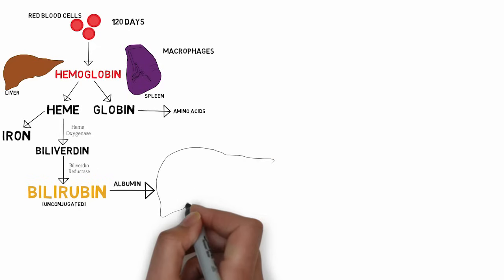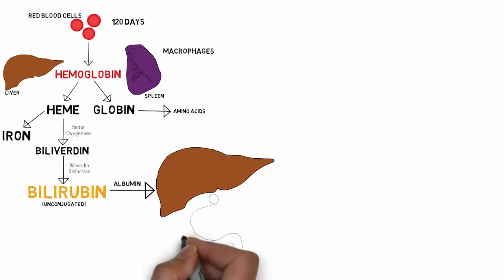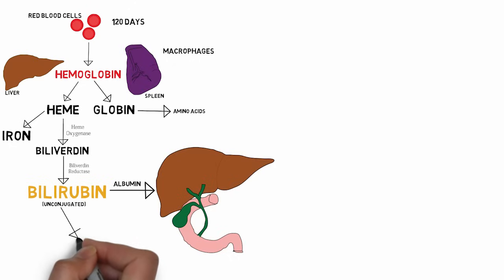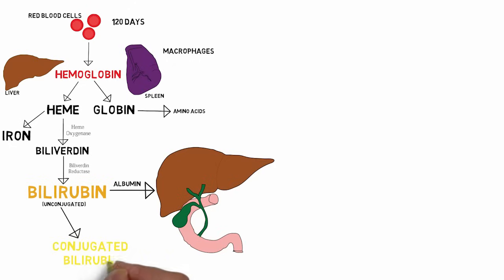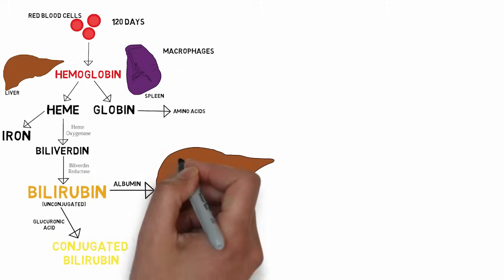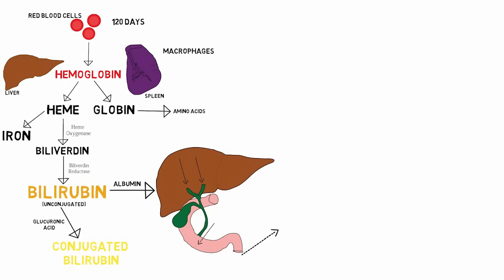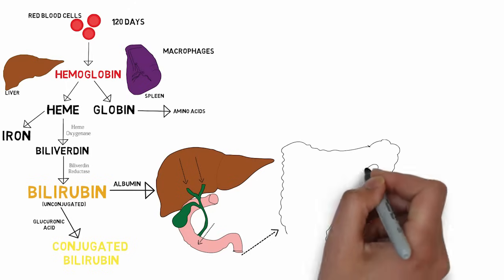In the liver, the bilirubin is converted into the conjugated form, which is the water-soluble form of bilirubin. This reaction takes place by the combination of glucuronic acid with unconjugated bilirubin. It is then transported through the biliary channels into the duodenum, and through the duodenum it reaches the colon.